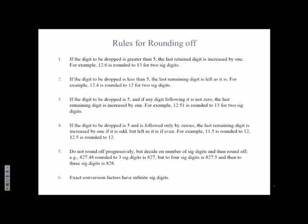So if you round 827.48 to 3 significant figures in one shot, you look at the number that you're dropping. 4 is being dropped and since 4 is less than 5, the answer is 827. But if you do progressive rounding, see what happens. You have 827.48, you drop 8. 8 is more than 5, so this becomes 827.5. And then again, when you round it, because this is odd, this becomes 828. So the answer is different if you do rounding in one shot. So don't do progressive rounding.